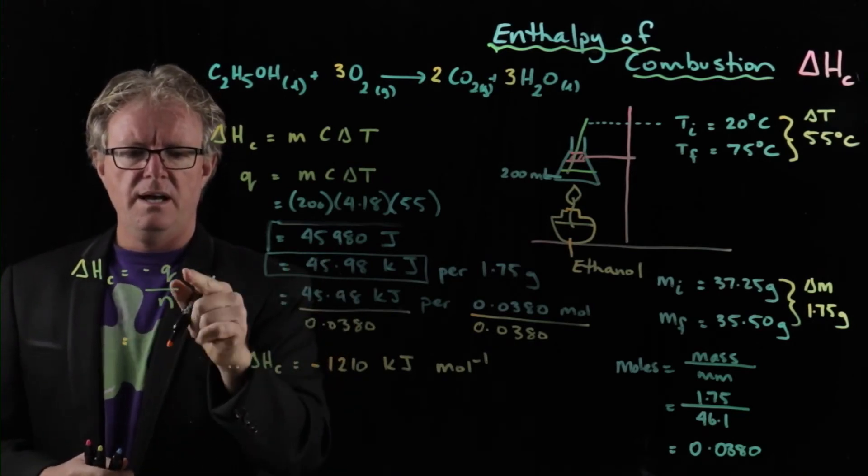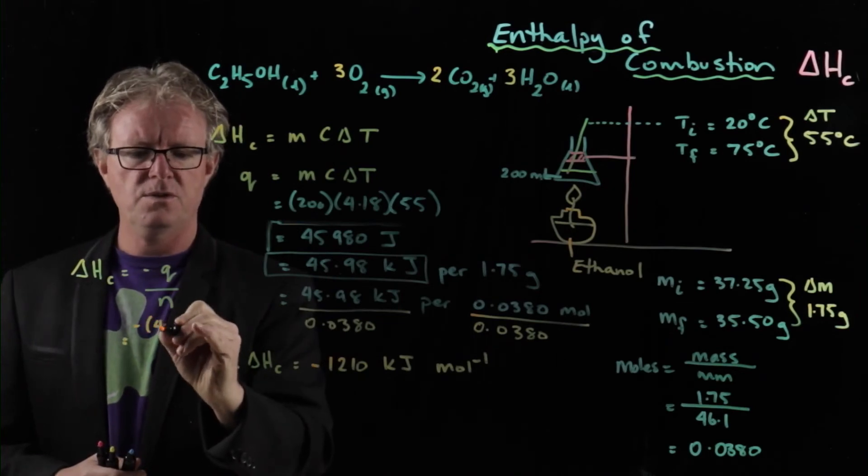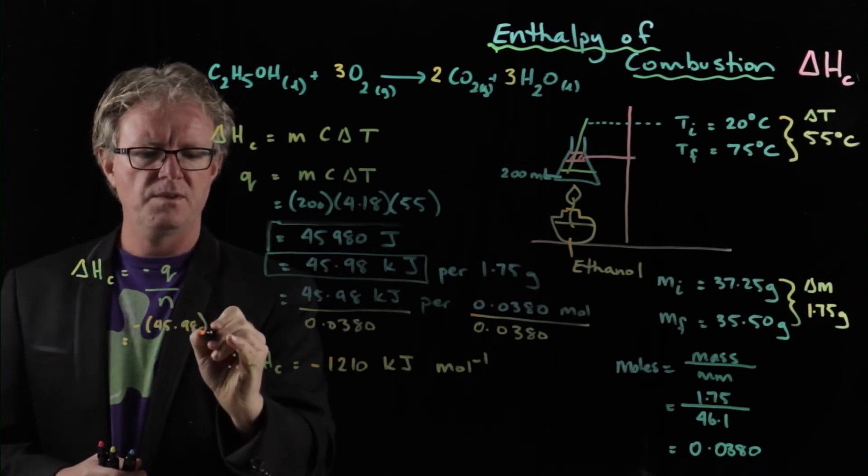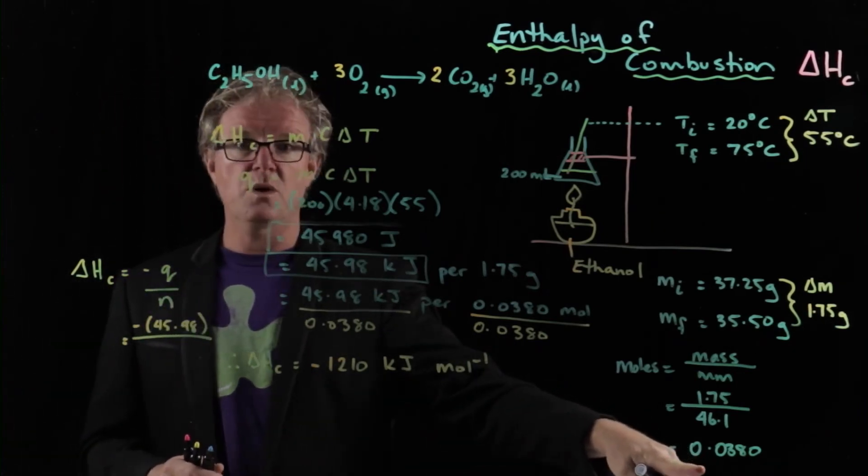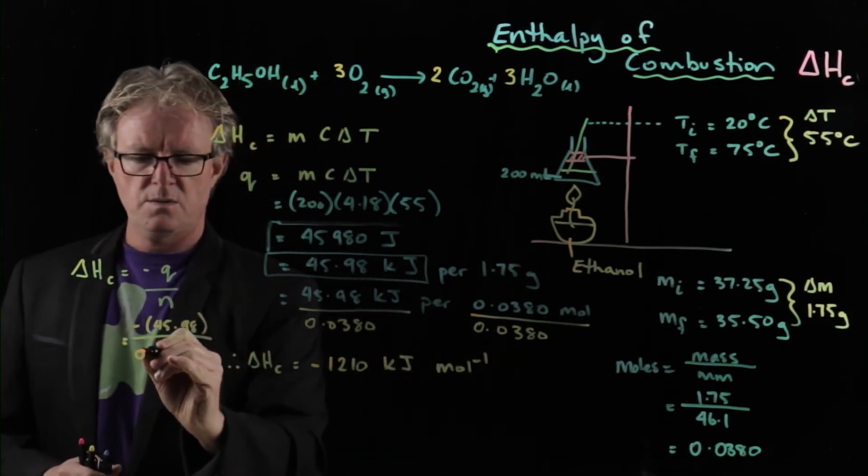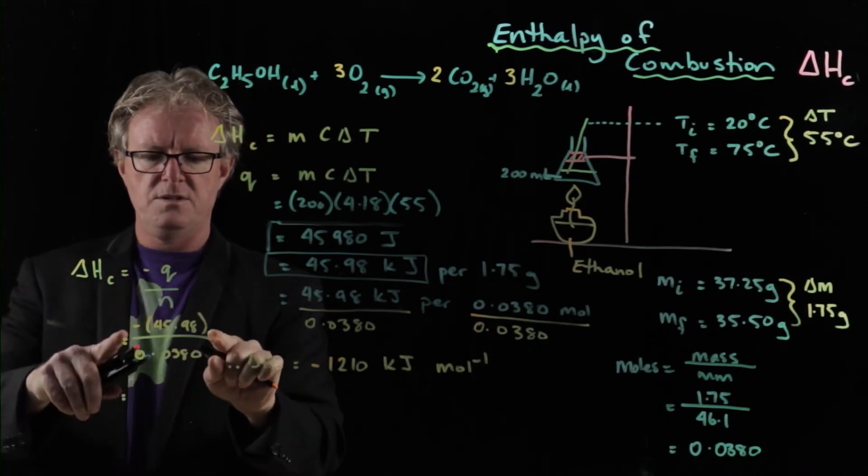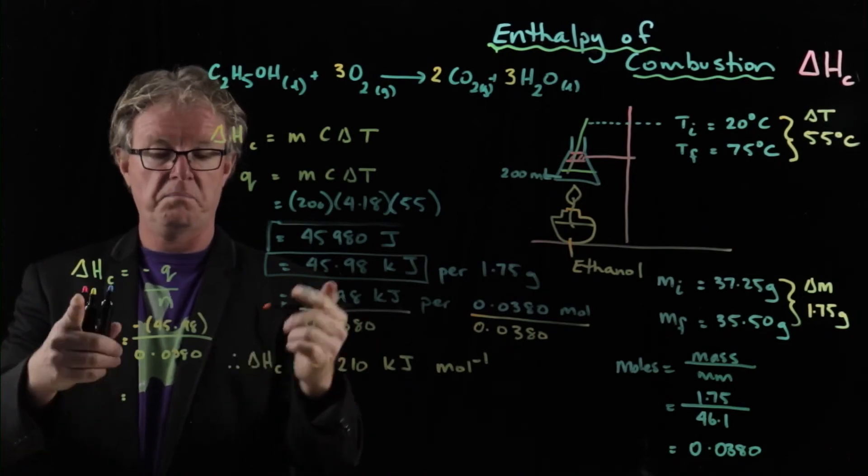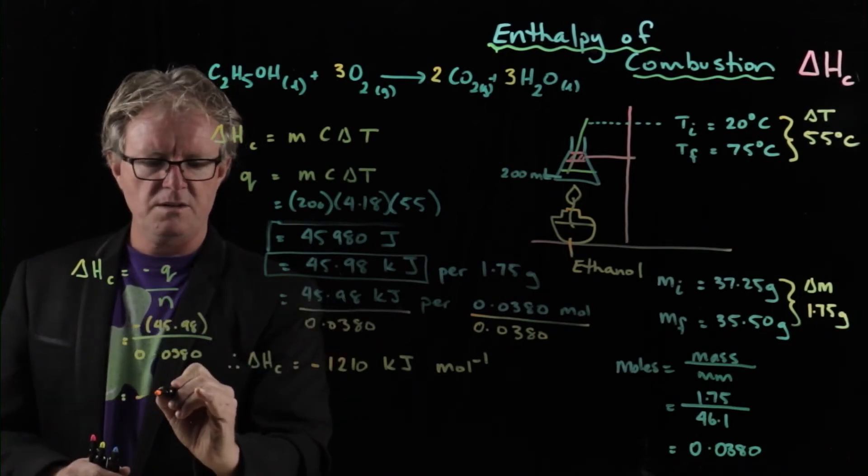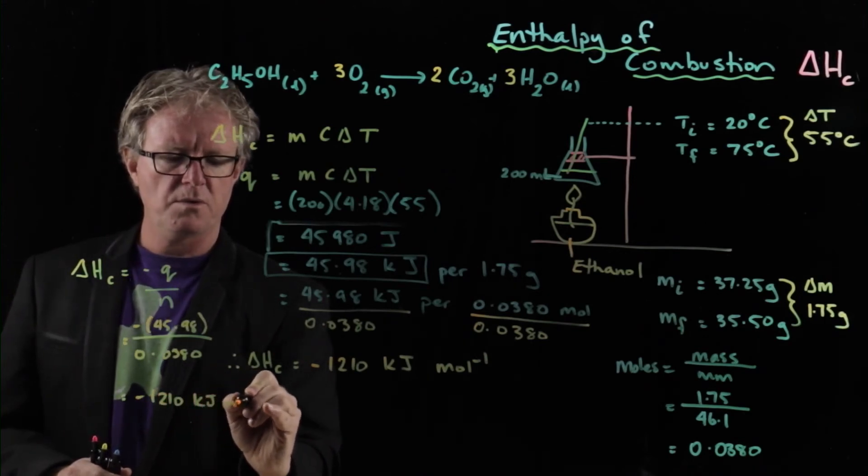So we can use this relationship here and we can go, okay, well our Q value was this here, 45, so it's minus 45.98 divided by the number of moles that we used. The number of moles we used was over here, 0.0380. And notice that that is exactly the calculation we're doing anyway, right there. And so we end up with the same value: minus 1,210 kilojoules per mole.